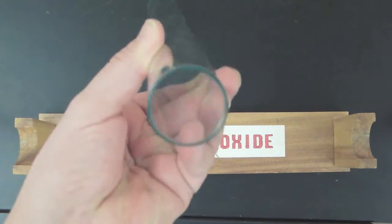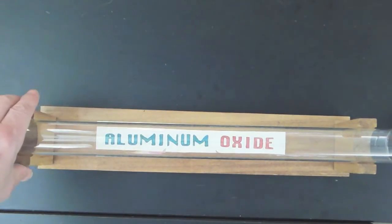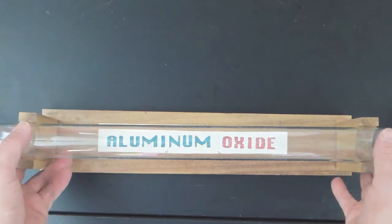Now if I take the tube and I hold it directly above the words aluminum oxide, as you can see we can still read the words very plainly right through the tube.